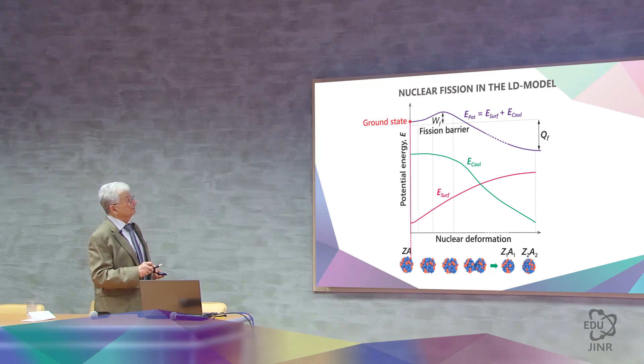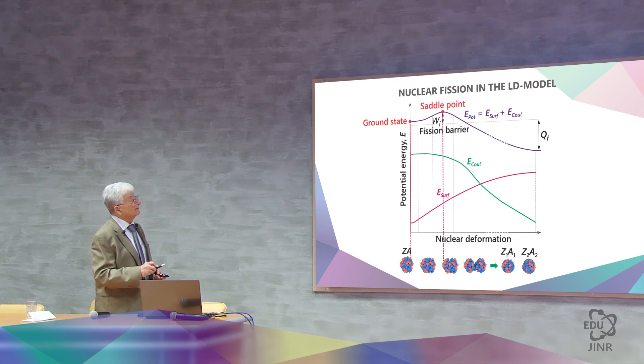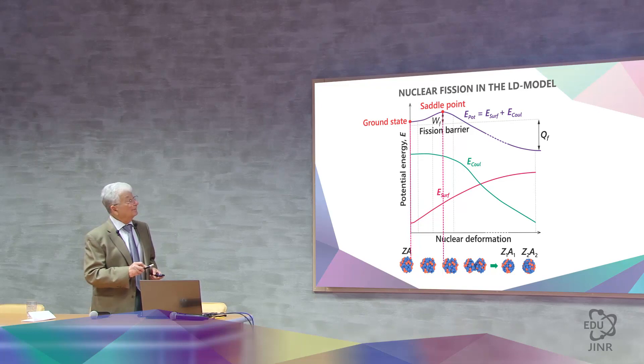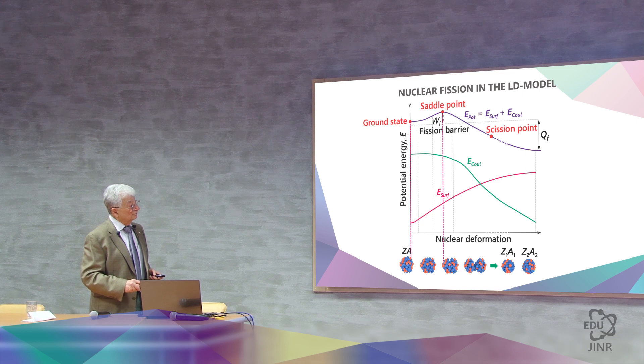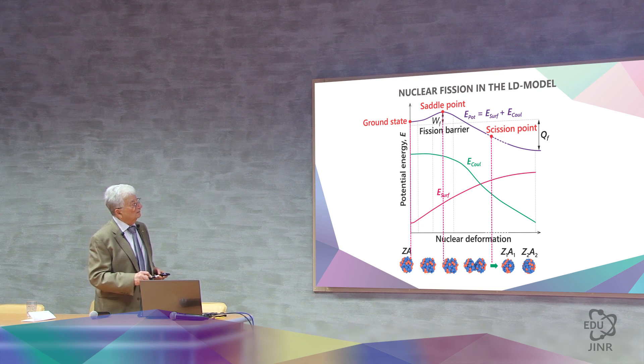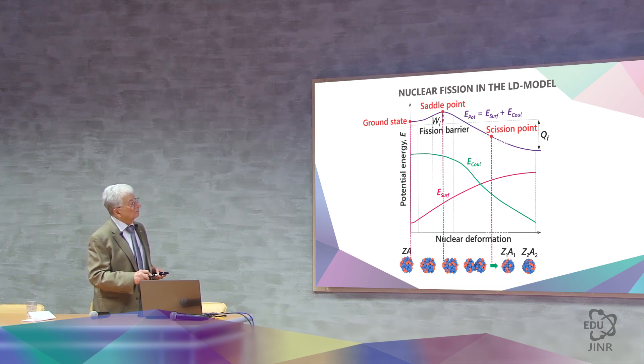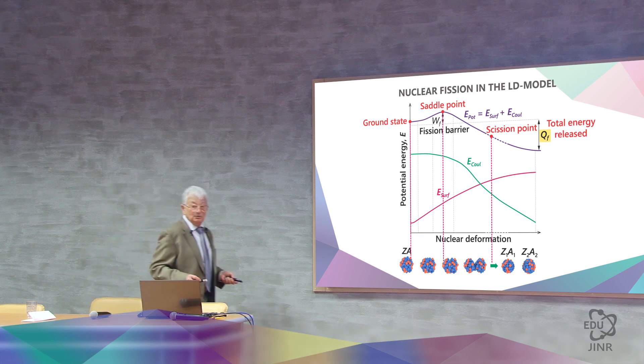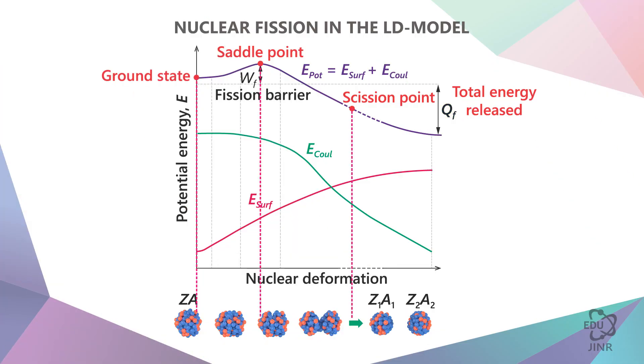There are several specific points that regulate this process. The first point is the starting point, this is the sphere. The second point is a deformed state, which corresponds to this critical deformation, after which is the point of no return, the process can only continue to the point of rupture. At this moment, the two halves will break, and they will accelerate, pushing away from each other. And this energy that is visible here, the difference between the initial energy and the final energy of the two nuclei, is what gives us electricity. And this is exactly the energy of excretion that occurs in fission.